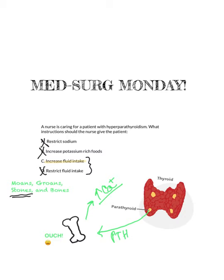So let's talk a little bit more about hyperparathyroidism. Causes are usually going to be due to either tumors or low vitamin D. If we don't have enough vitamin D, that's not going to be able to absorb calcium, so we're not going to have enough blood calcium, and the parathyroid hormone is going to have to go in and get calcium out of the bone.